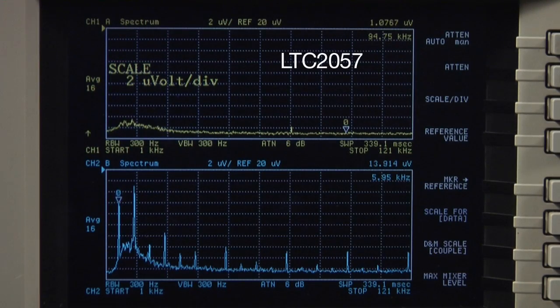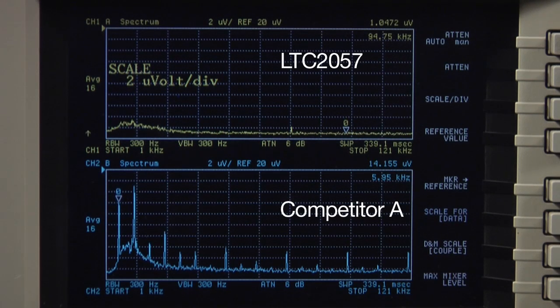The top trace shows the output of the LTC2057 and the bottom trace shows that of competitor A. Voltage ripple in the LTC2057 has been suppressed to below 1µV RMS and should not affect the precision of your measurements or interfere with signals of interest.